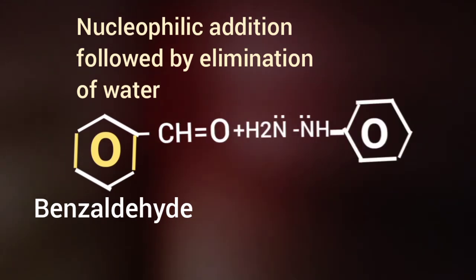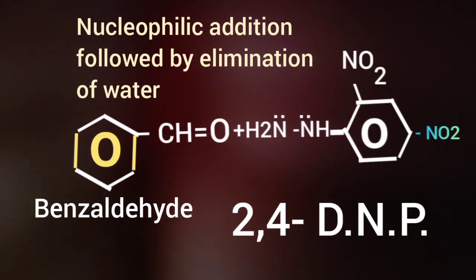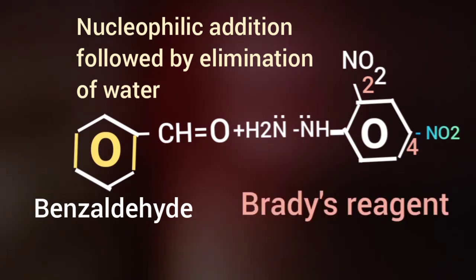The structure of phenylhydrazine is written on the screen. If 2 NO2 groups are attached to 2 and 4 positions of phenyl group, then 2,4-dinitrophenylhydrazine is produced. That is known as Brady's reagent.